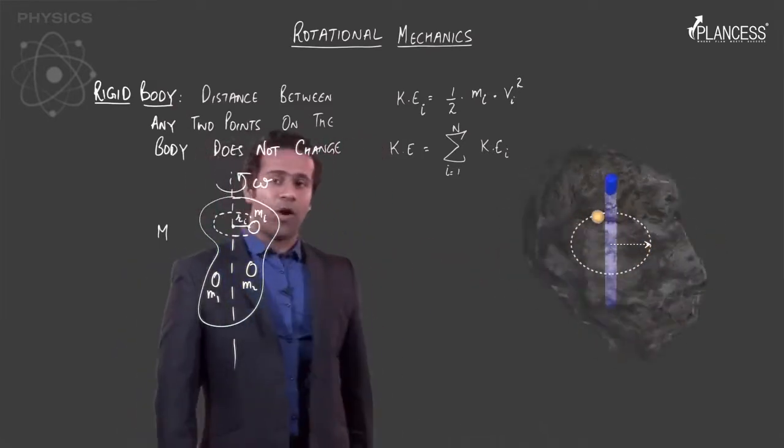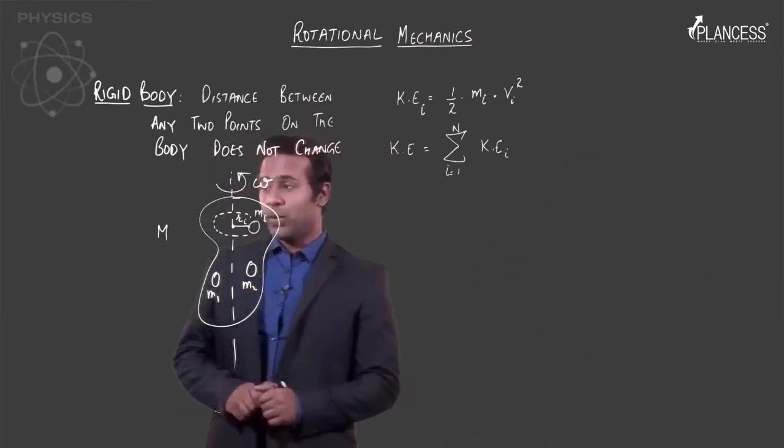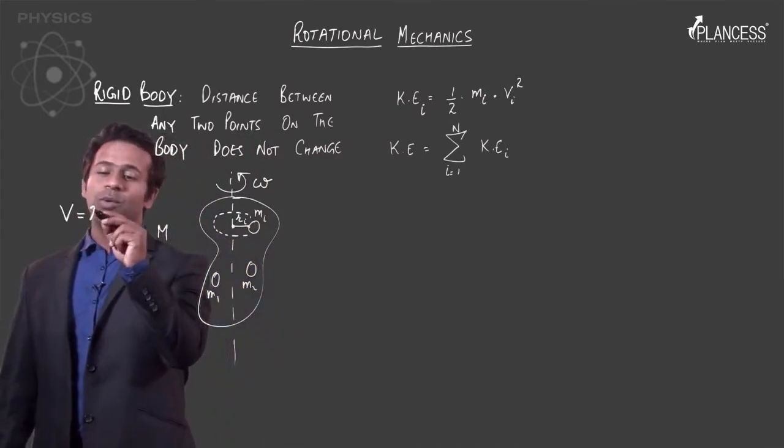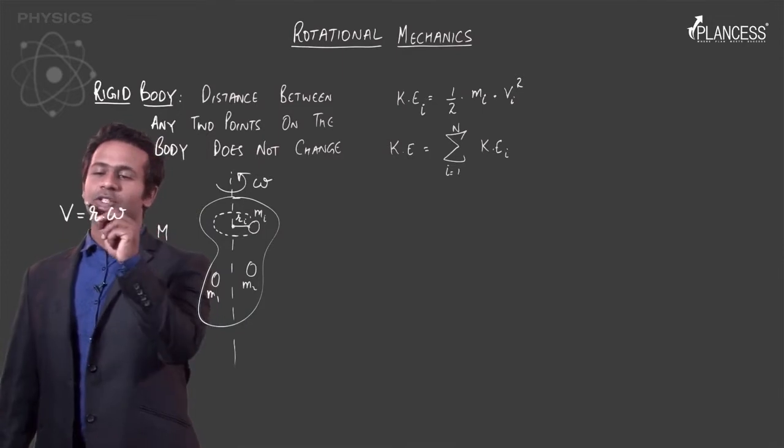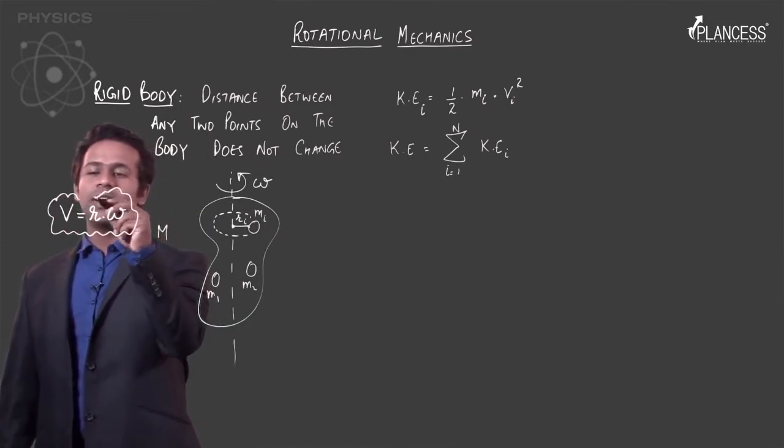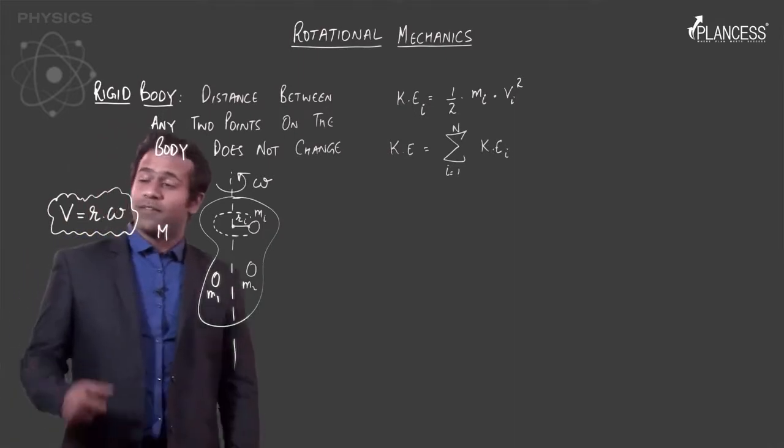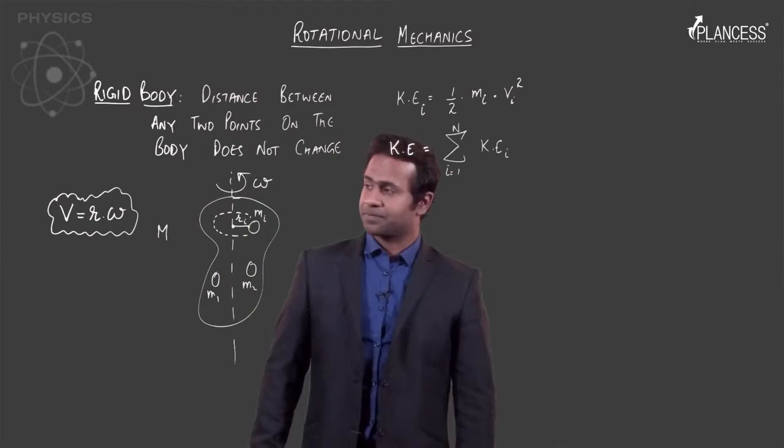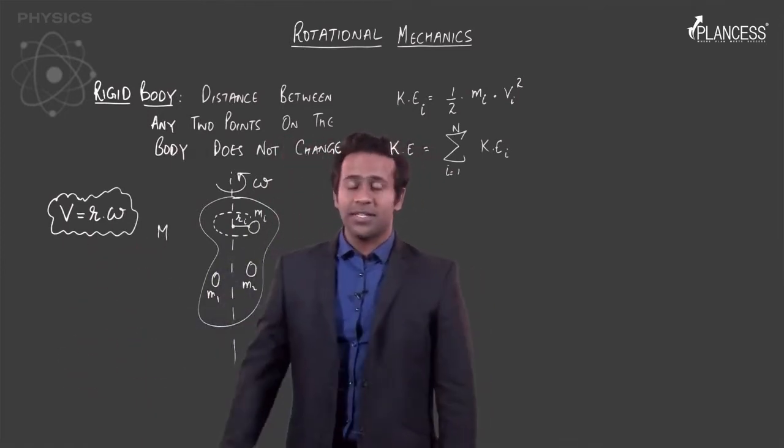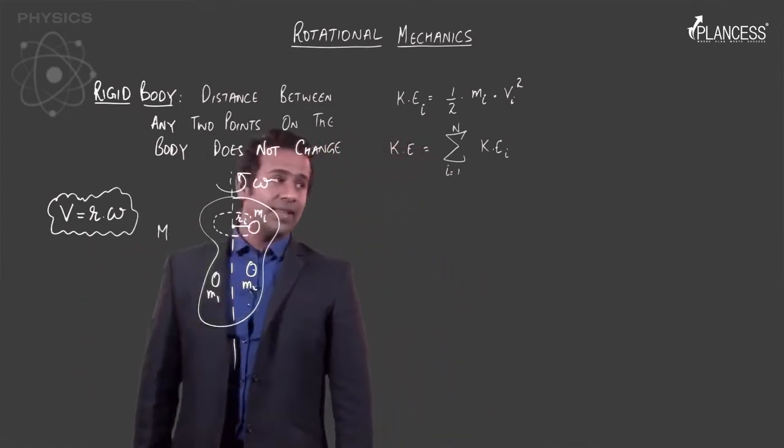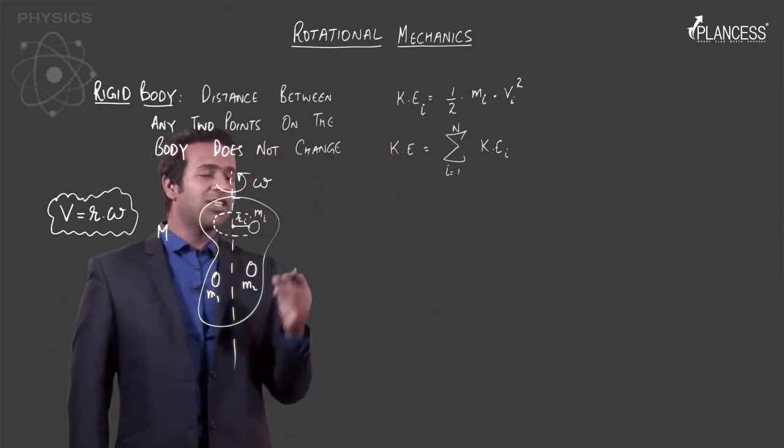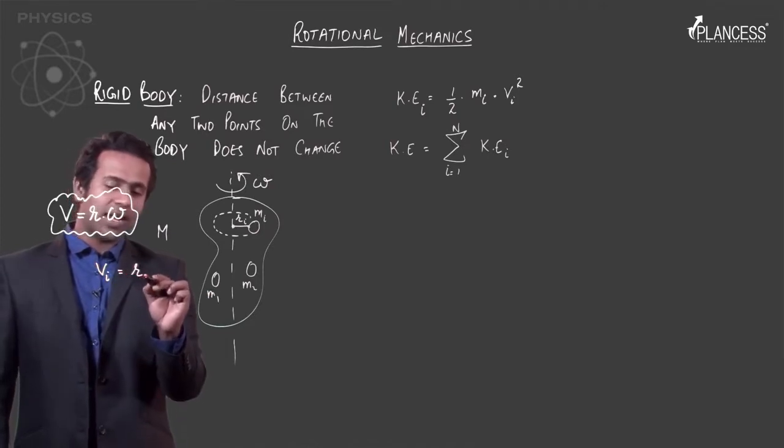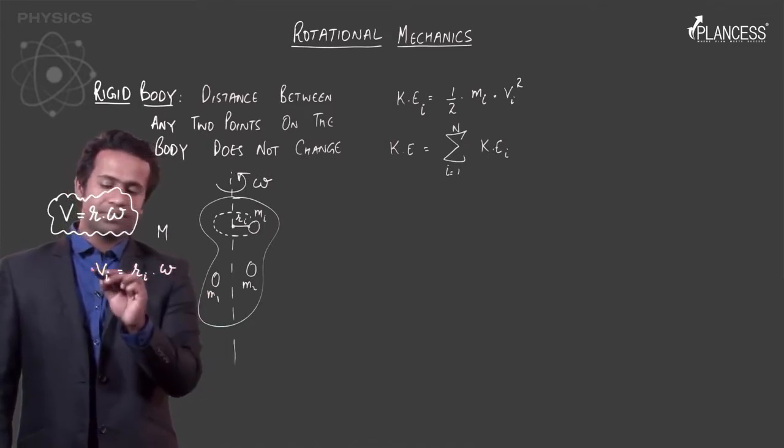Since a circle is being formed, recall that we know that linear speed in case of circular motion is equal to radius times the angular speed. We have read this before in circular motion. V is the tangential speed, omega is the angular speed and r is the radius. So we can write that the tangential speed Vi is equal to the radius Ri into omega.